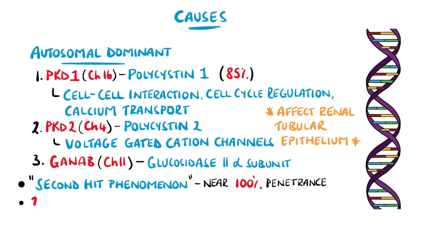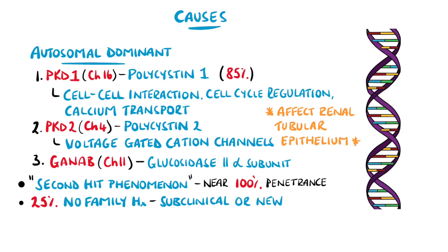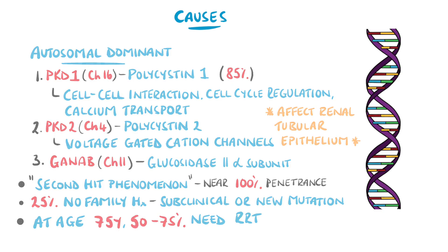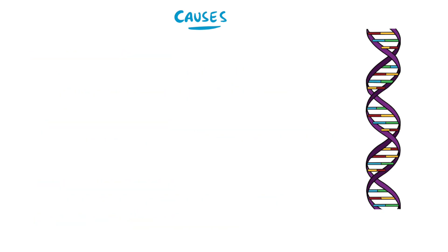Around 25% of cases do not have a family history, which could be due to subclinical disease in the relatives, or it could be a new mutation. By age 75, between 50 and 75% of patients require renal replacement therapy.